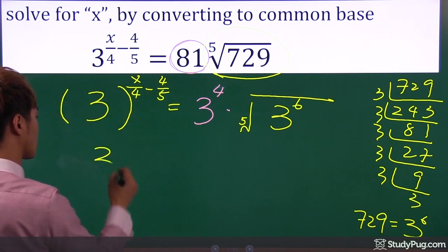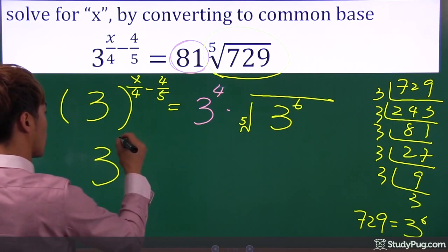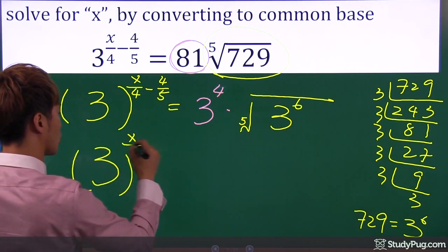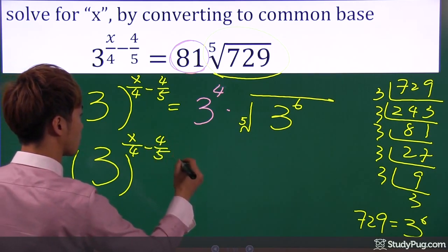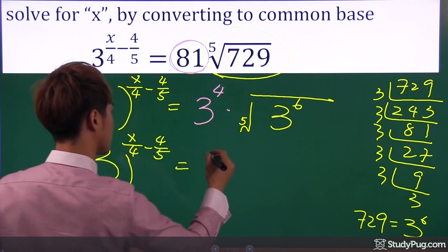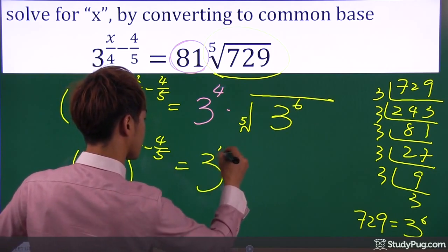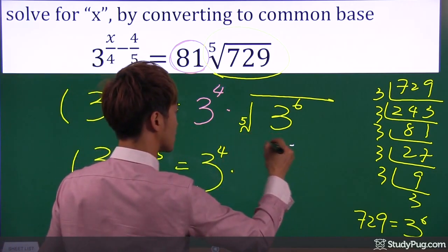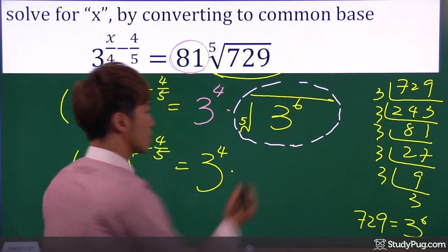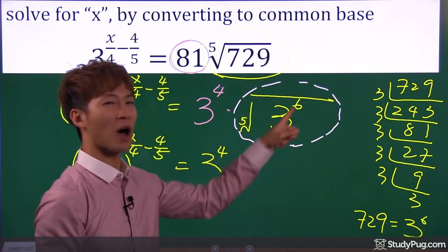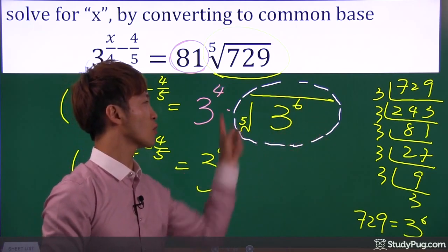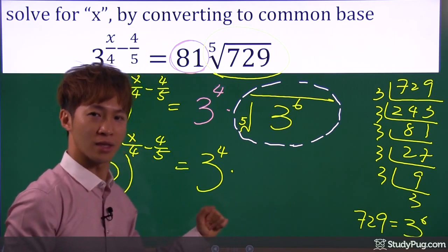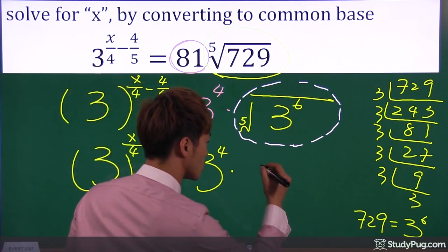We're not going to touch anything on the left side. We still have x over four minus four over five. Now, on the right side, fifth root of three to the power of six. Are we able to write this as a simple expression, base of three? Yes. We can do it this way.